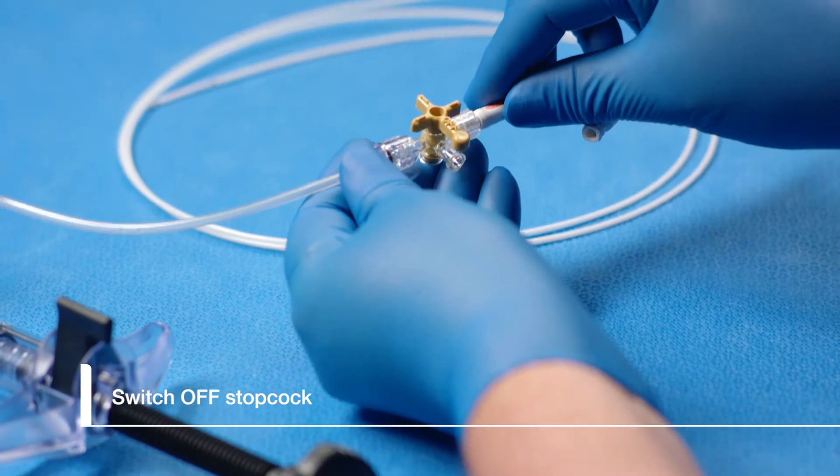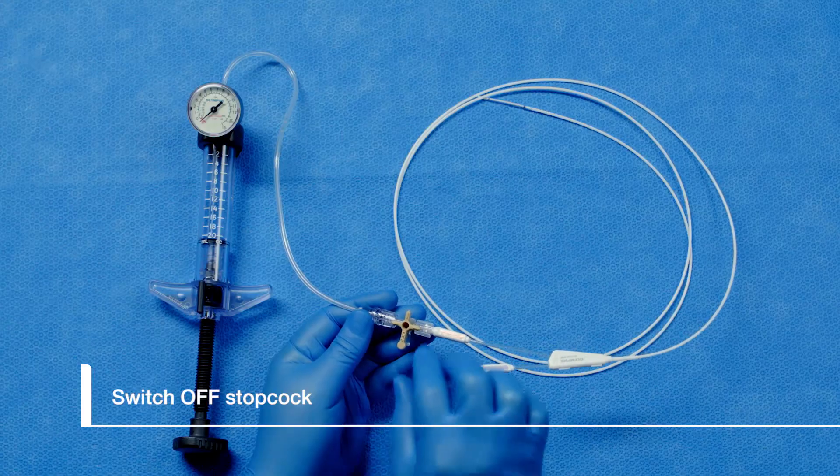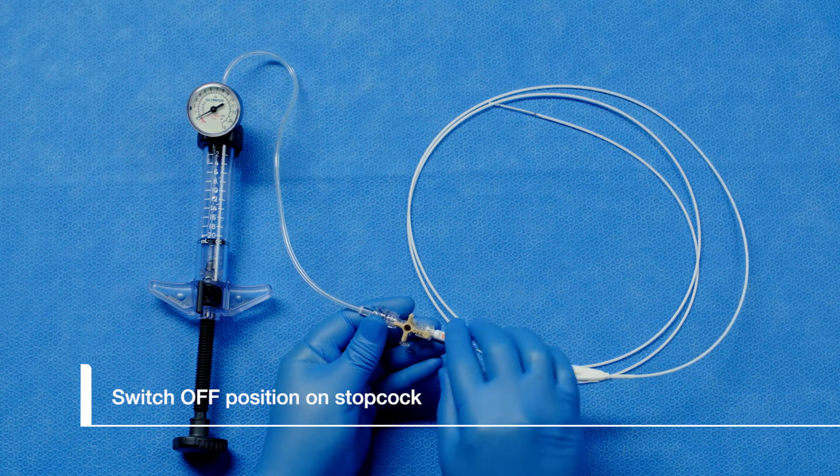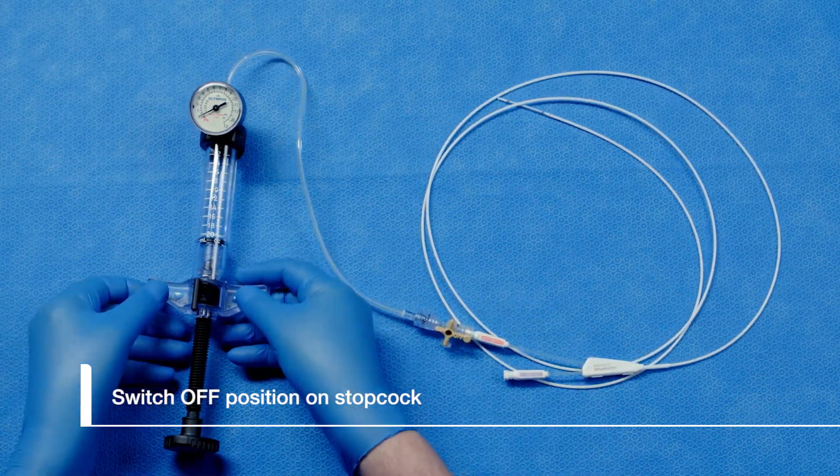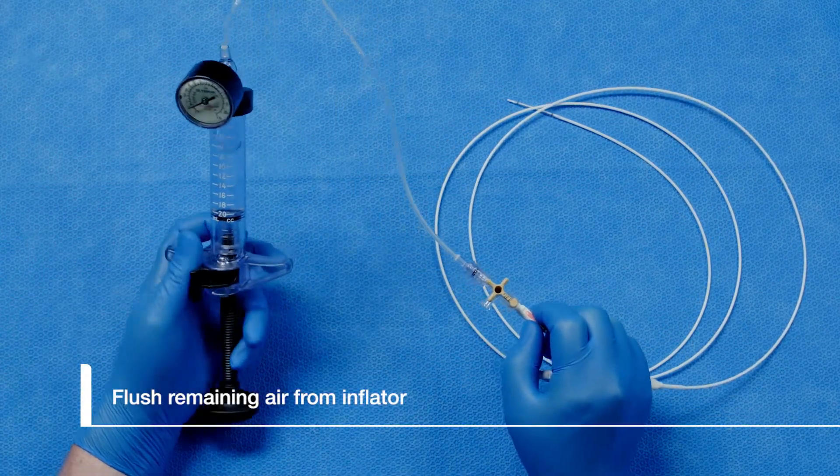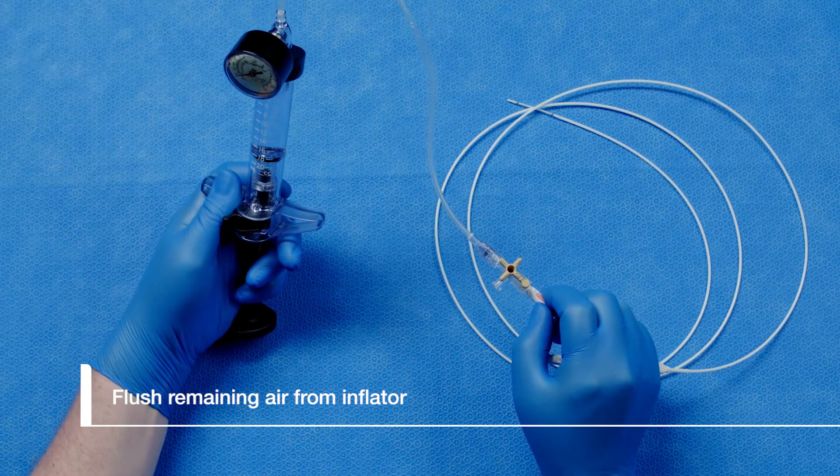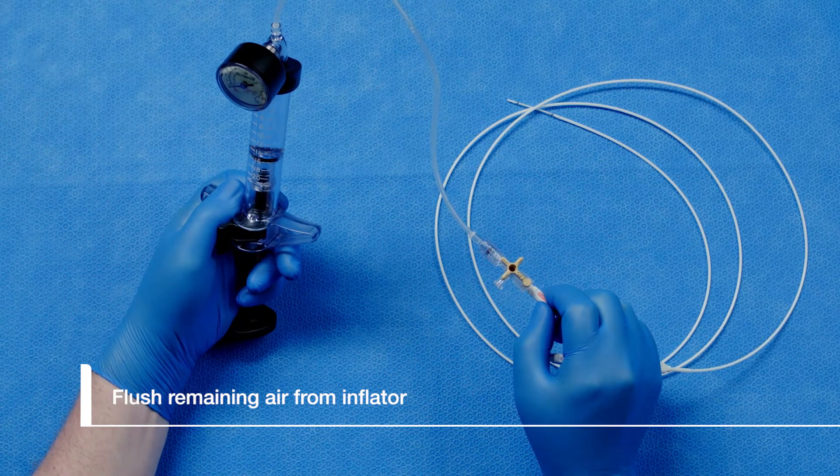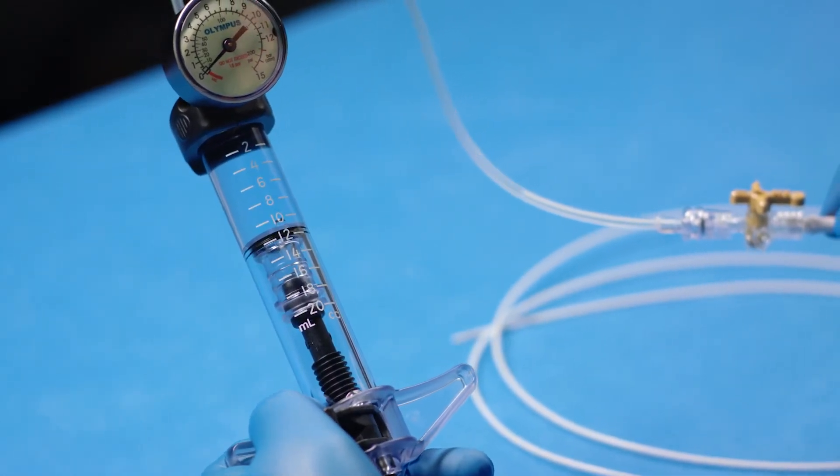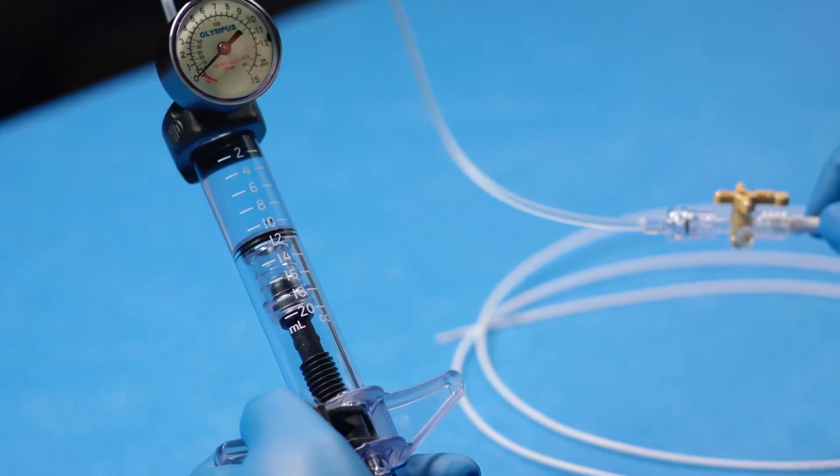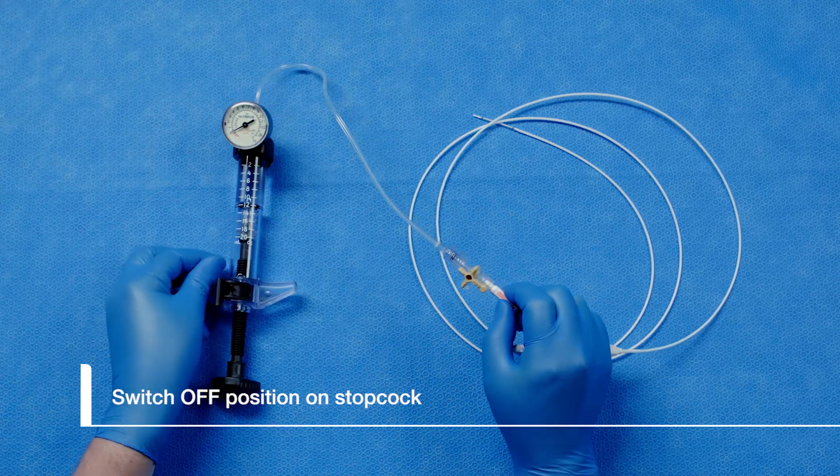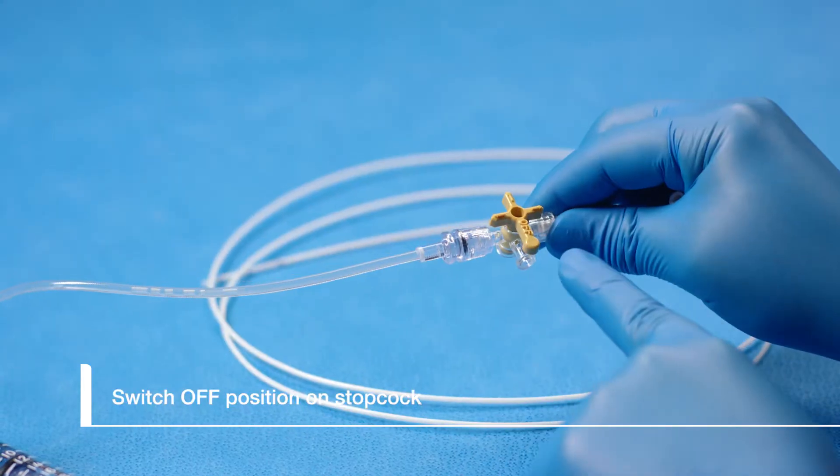Before releasing air from the inflator, we need to turn the switch on the T-piece off to the balloon. When the stopcock is switched off to the balloon, you will hear the vacuum in the inflator release. Now we will turn the locking switch on the inflator back to the left. We will bleed off the remaining air in the inflator through the side port on the stopcock. Slowly advance the plunger until fluid begins to come out of the side port on the stopcock. Once all of the air is removed, switch the side port of the stopcock to the off position as shown.